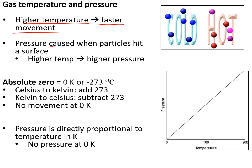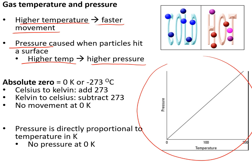Gas pressure is caused by particles hitting the surfaces of a container. At higher temperatures particles move faster, so they hit the surface more often, giving higher pressure — the graph of pressure versus temperature shows direct proportion. If you cool a gas enough, particles stop moving completely: this is absolute zero, or 0 K, which equals −273 °C. At absolute zero the pressure is zero because particles are not moving. To convert: Kelvin to Celsius subtract 273; Celsius to Kelvin add 273.